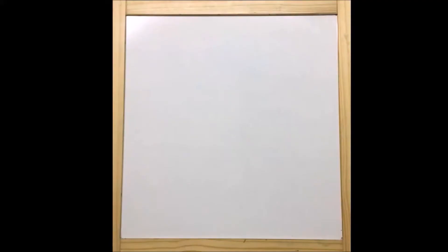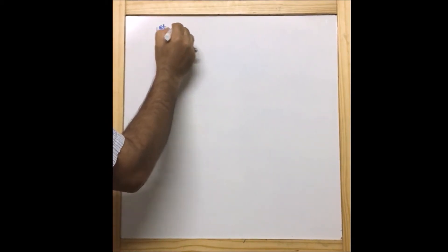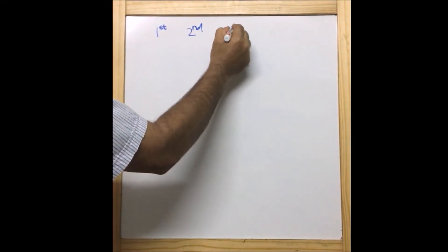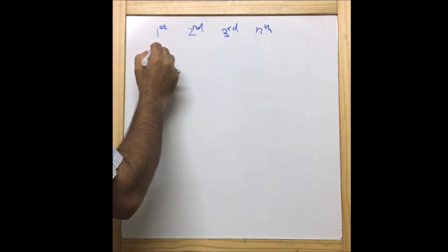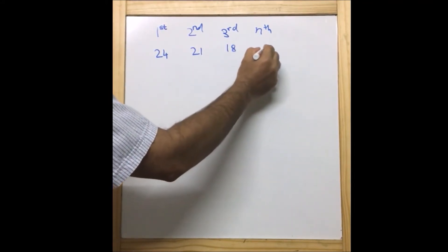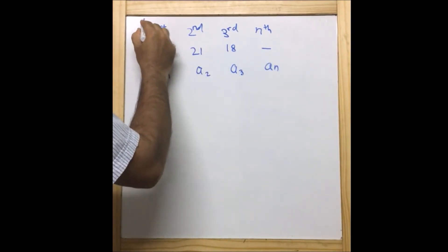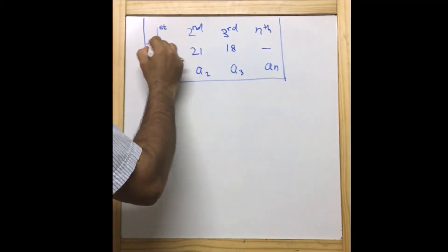This question is really easy, but we need to understand it, otherwise it will become complicated. The question asks: how many terms of the AP 24, 21, 18 must be taken so that their sum is 78? Let us write down what we have. The first term is 24, the second term is 21, the third term is 18, and the nth term we don't know — naming them a1, a2, a3, an.